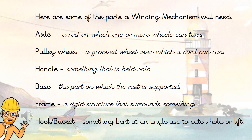An axle — this is a rod on which one or more wheels can turn. A pulley wheel — this is a grooved wheel over which a cord or a rope can run. A handle — this is something that is held onto. A base — this is the part on which the rest of the mechanism is supported. A frame — this is a rigid structure that surrounds something. A hook and bucket — this is something bent at an angle which is used to catch hold of or lift something else.